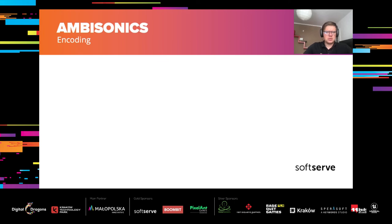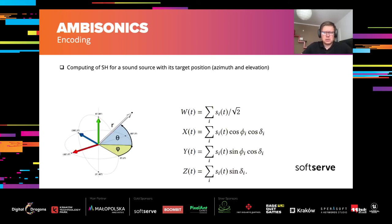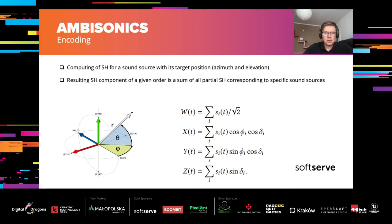The other way of producing ambisonics content is encoding. In this process, we pan or encode our sound sources to a desired position, usually defined in a spherical coordinate system using azimuth and elevation angles. Here is a set of simple equations that allow encoding a sound source S and computing corresponding spherical harmonic components W, X, Y, Z with the position defined by azimuth and elevation angle. This process can be repeated for any number of sound sources, and the resulting spherical harmonics are then added up.